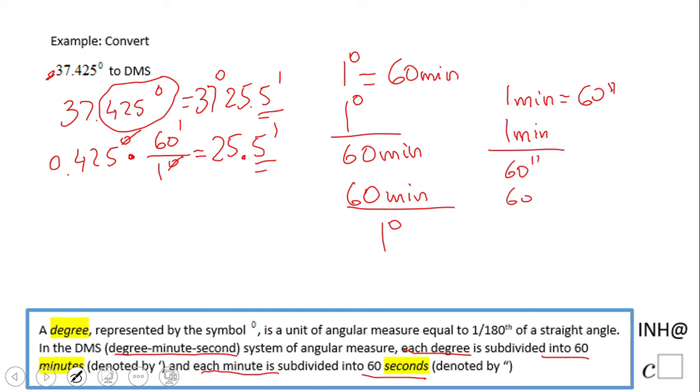I take the 0.5 minutes and multiply by 60 seconds over 1 minute. The minutes cancel out, and I have 0.5 times 60, which is 30 seconds.